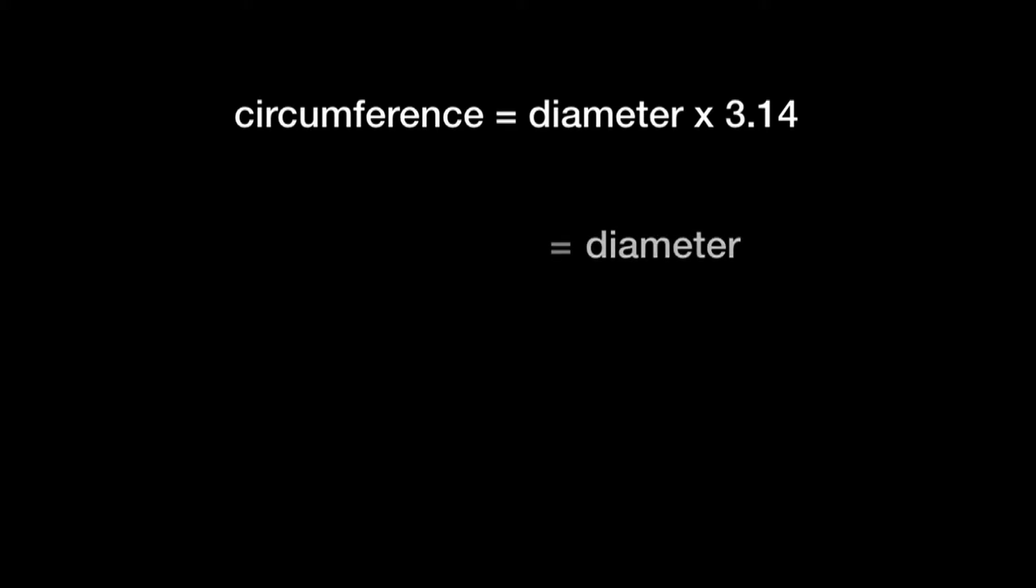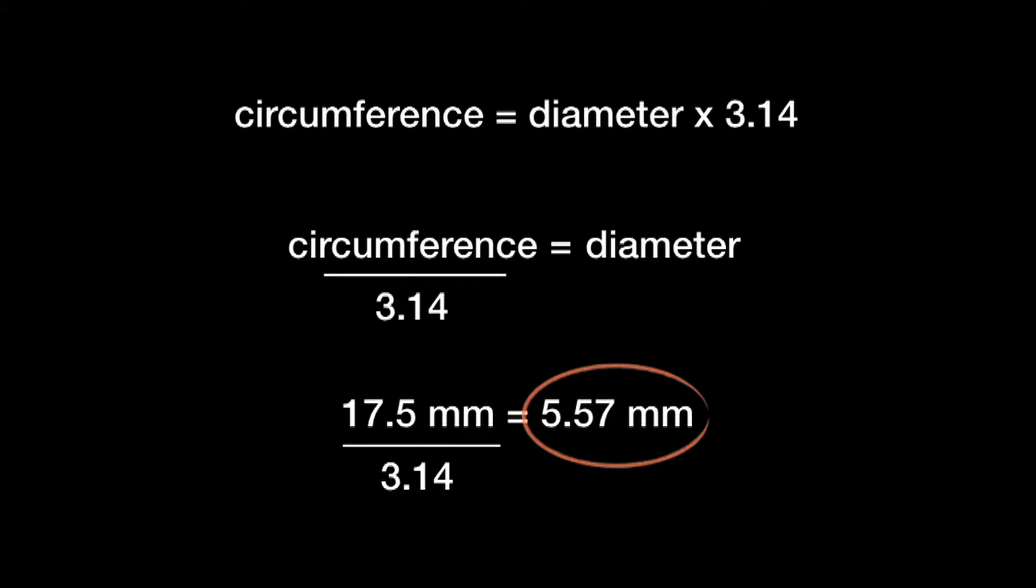If you remember your high school geometry, the circumference of a circle is equal to the diameter times pi or 3.14. Well, since we want to find the diameter, we'll rearrange the formula to say diameter equals circumference divided by 3.14. So we measured the circumference and it's 17.5 millimeters. So let's divide 17.5 by 3.14 and we get 5.57. That is what this calculation says is the skid tube diameter.